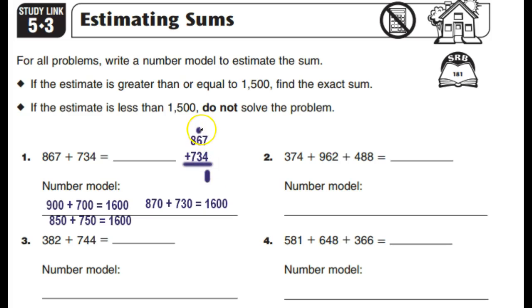6 plus 3 is 9. Then I have my one more up here. So, that's 10. And 8 plus 7 is 15. Plus the one more is 16. And you can see my final answer is 1,601.